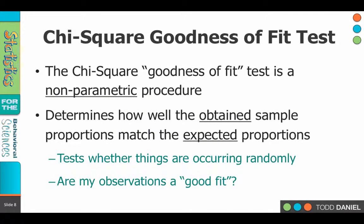The chi-square is a goodness-of-fit test and a nonparametric procedure, and it tells us how well our obtained sample, our observed scores, match the expected proportions. So it tests whether what we see is what we'd expect to see if everything was occurring randomly — essentially asking, are the observations that I have a good fit if my assumption of randomness holds?